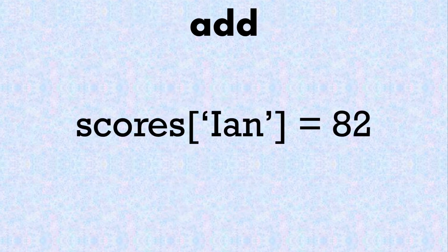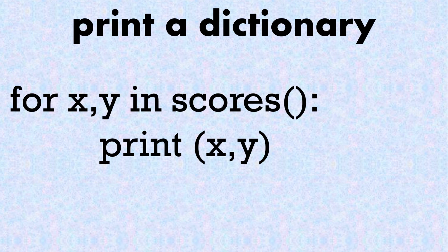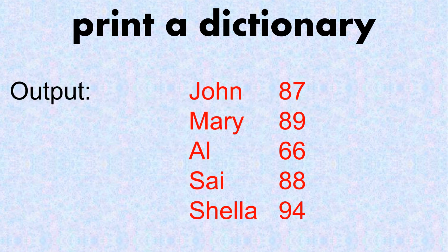If we want to add a score we can use square brackets with the key and the value. We can print a specific entry using the dictionary name — here 'scores' — and the key, in this case 'Ian'. We can also print a dictionary using a for loop, where x is the key and y is the value, printing all names and scores.